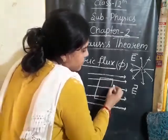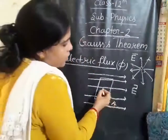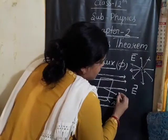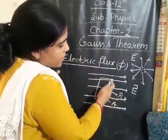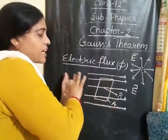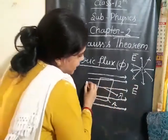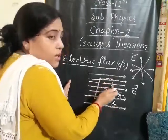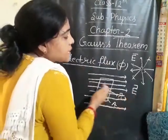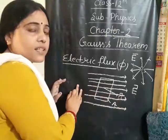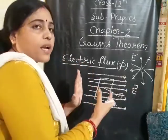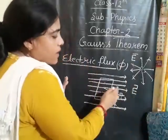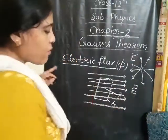Consider an area placed inside a uniform electric field. The area vector is normal to the surface, pointing outward. The electric flux is related to the number of electric field lines — force lines — passing through this area. We count how many lines penetrate the area: 1, 2, 3. These are the electric field lines, and the number of electric lines of force passing through the surface gives the electric flux.